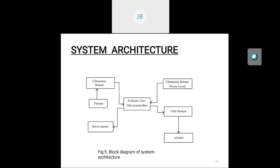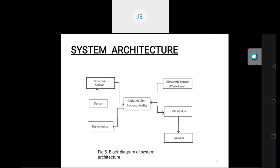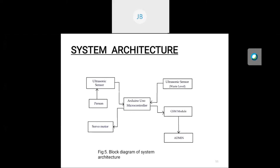In the system architecture, when a person comes in front of the dustbin, the ultrasonic sensor fitted at the front sends data to the Arduino. Arduino then instructs the servo motor to rotate 45 degrees, and the lid opens. When the person moves away, the sensor again sends data to Arduino, which instructs the servo motor to rotate minus 45 degrees, closing the lid. This cycle repeats continuously.